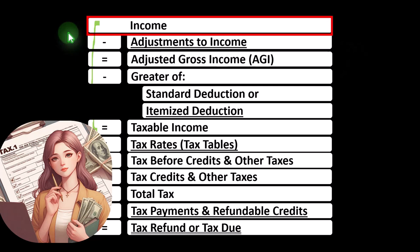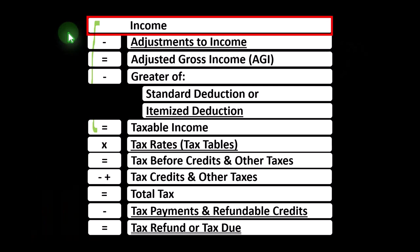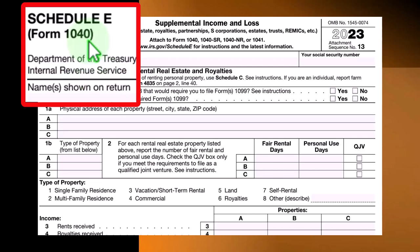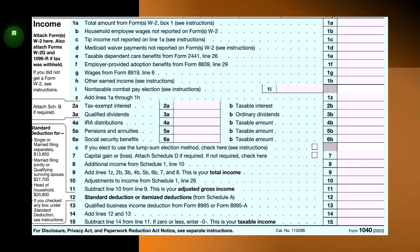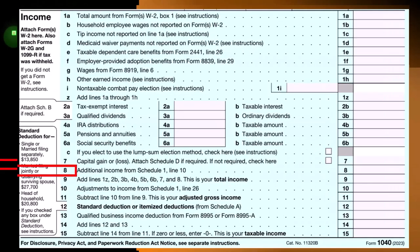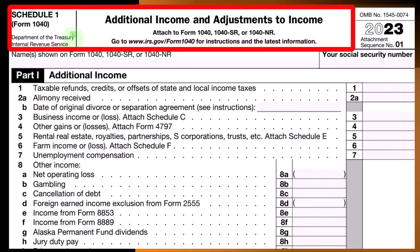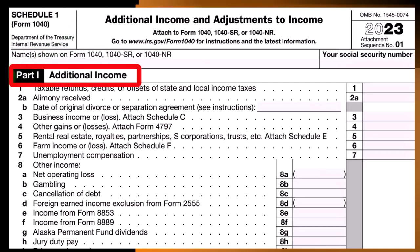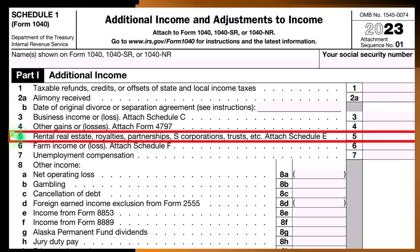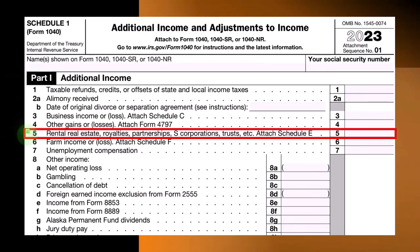This income tax equation outlines the calculation of Form 1040, of which we see the first page income section here. Schedule E ultimately rolls into line eight, additional income from Schedule 1. On Schedule 1 — additional income and adjustments to income, Part 1, additional income — the Schedule E rolls into line five: rental, real estate, and so forth.